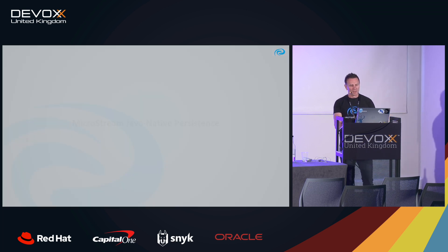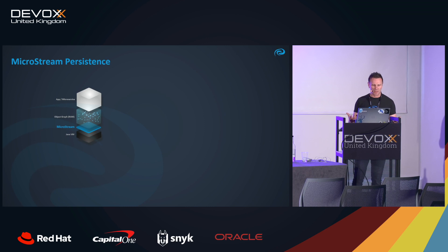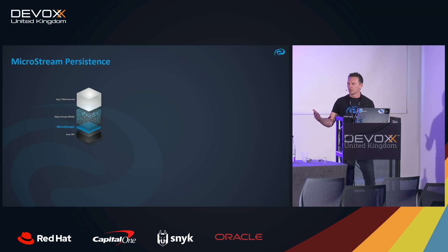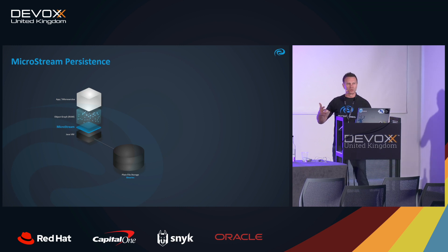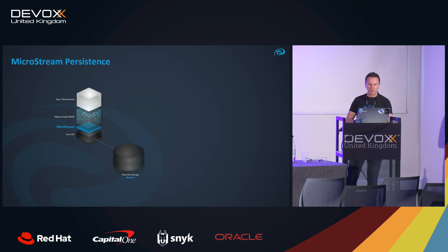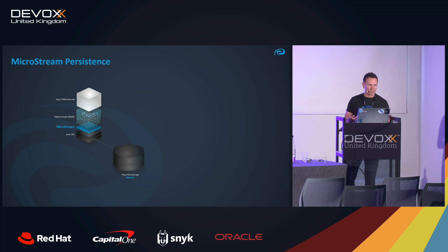MicroStream works fundamentally differently. We are not inventing a new data structure — we want to store object graphs as they are in memory. We use object graphs in Java, so we need something to store object graphs, and that's exactly what MicroStream is and does. You only need your Java application or microservice, include MicroStream as a Java library via Maven, and then you're able to store any kind and any size of object graph.